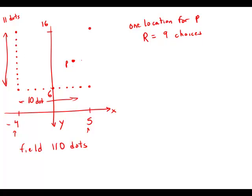And then Q would have to be perpendicular. Q would have to be going up and down. So Q could be any one of the other 10 dots in that column. So there are 10 choices for Q.